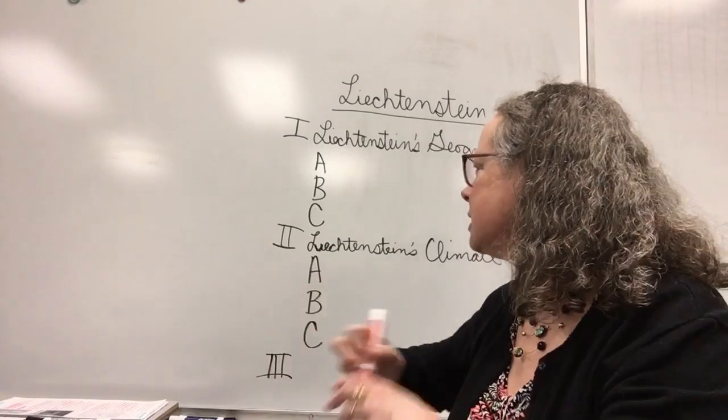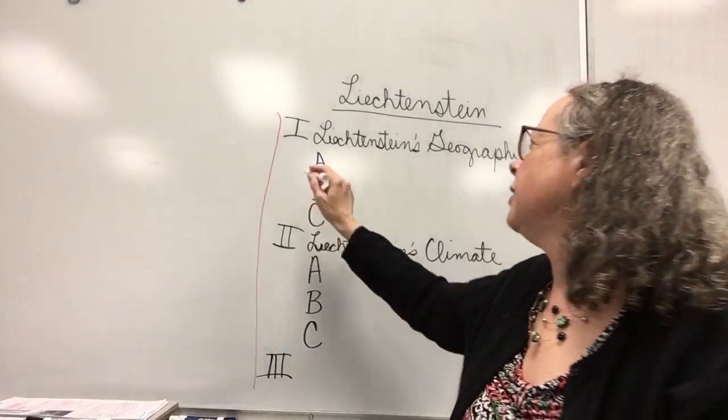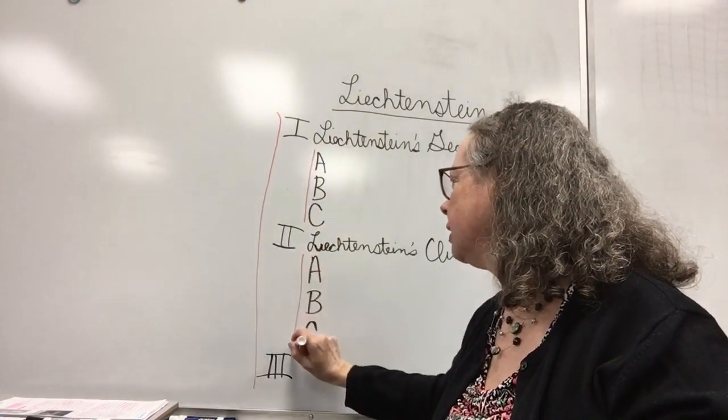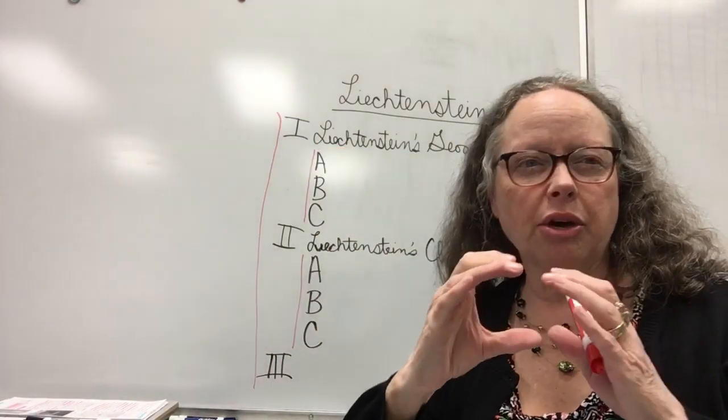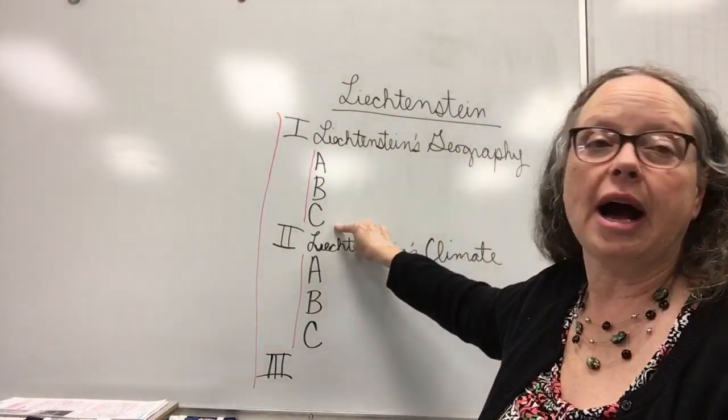All your Roman numerals are lined up right out here and then all your capital letters are lined up right here. So this is where the one, two, and three on your card are going to turn into A, B, and C on your outline.